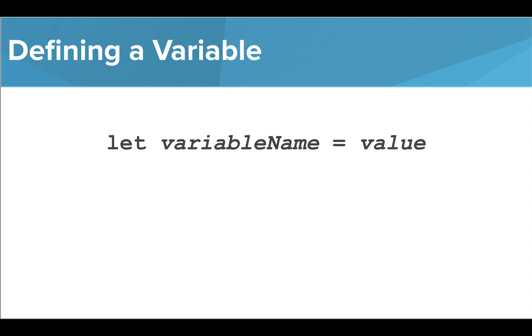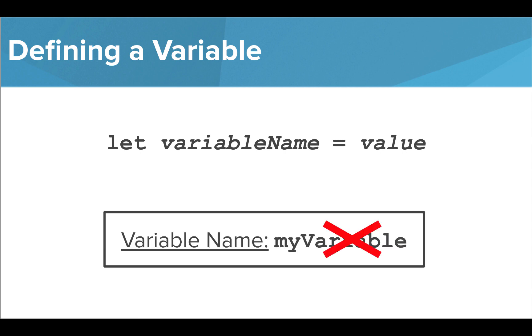Before you use a variable, you need to give it a name and assign it a value. When naming our variables, we need to be sure to follow our naming guidelines. So we would not want to use this name because it's not descriptive of the value it holds.